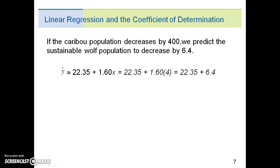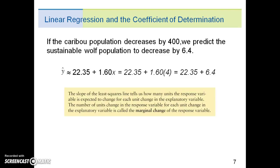If the caribou population decreases by 400, we predict the sustainable wolf population to decrease by 6.4. And that's just a matter of plugging in that value of 4 into the x-value. The 4 is for the 400 because the units is in hundreds. And we get 22.35 plus 6.4.